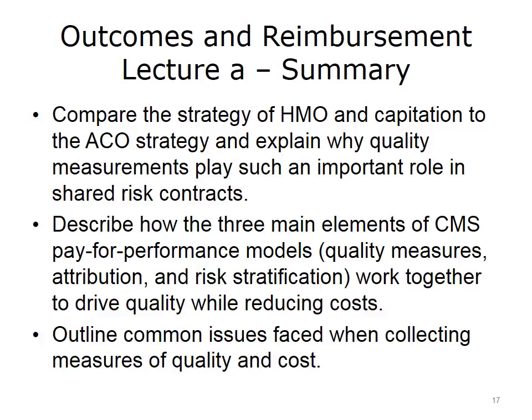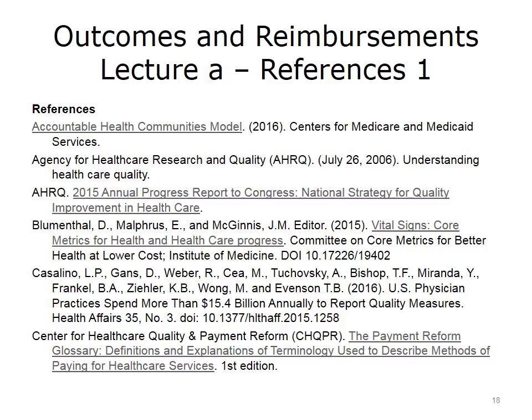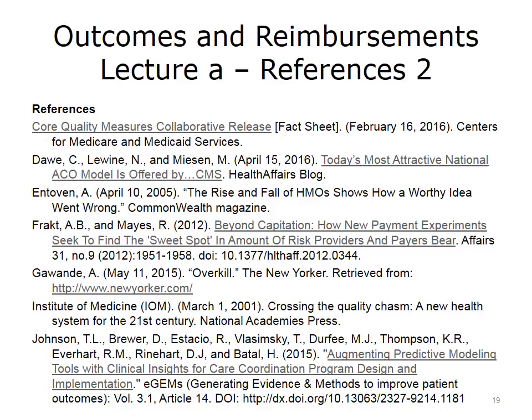This concludes Lecture A of Outcomes and Reimbursements. In summary, this lecture provided background information about the old HMO model, how HMOs compare with ACOs, and how ACOs are designed to ensure quality and reduce costs. Then we took a closer look at how quality measurement, attribution, and risk stratification work together. Finally, we looked at challenges in measurement and reporting. Thank you.